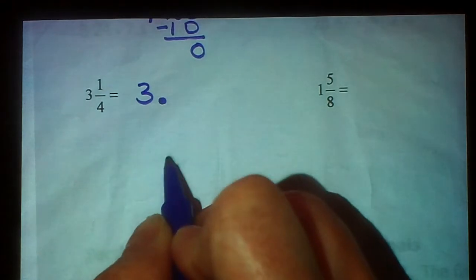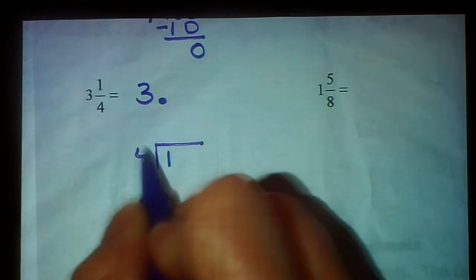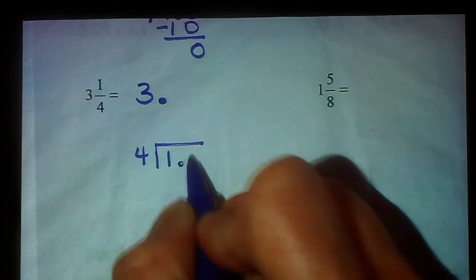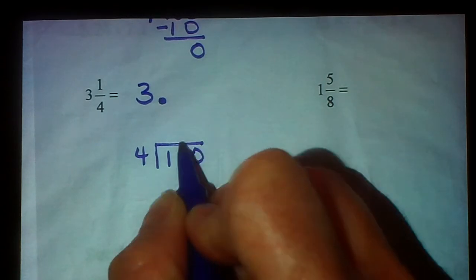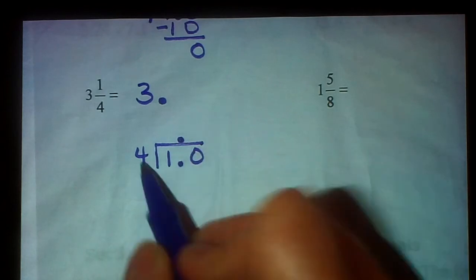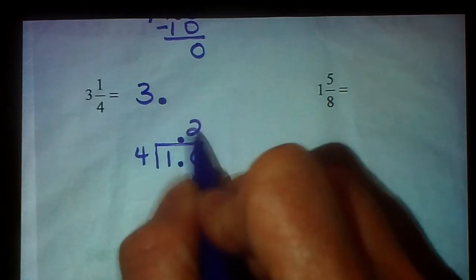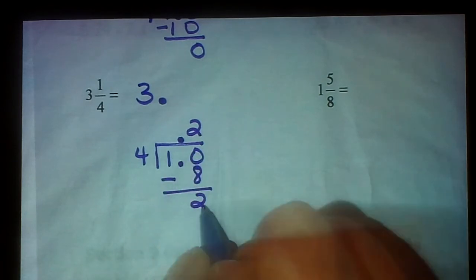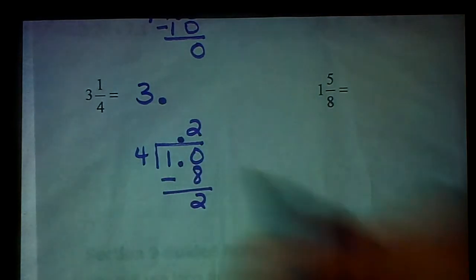So again, the number on top goes inside. The number on the bottom goes outside. 4 will not go into 1. So we need to add a decimal point and a 0. I'm just going to bring that up there right now. Now, 4 goes into 10 twice. 4 times 2 is 8. We subtract. 10 minus 8 is 2. So we're not done because we have a remainder.